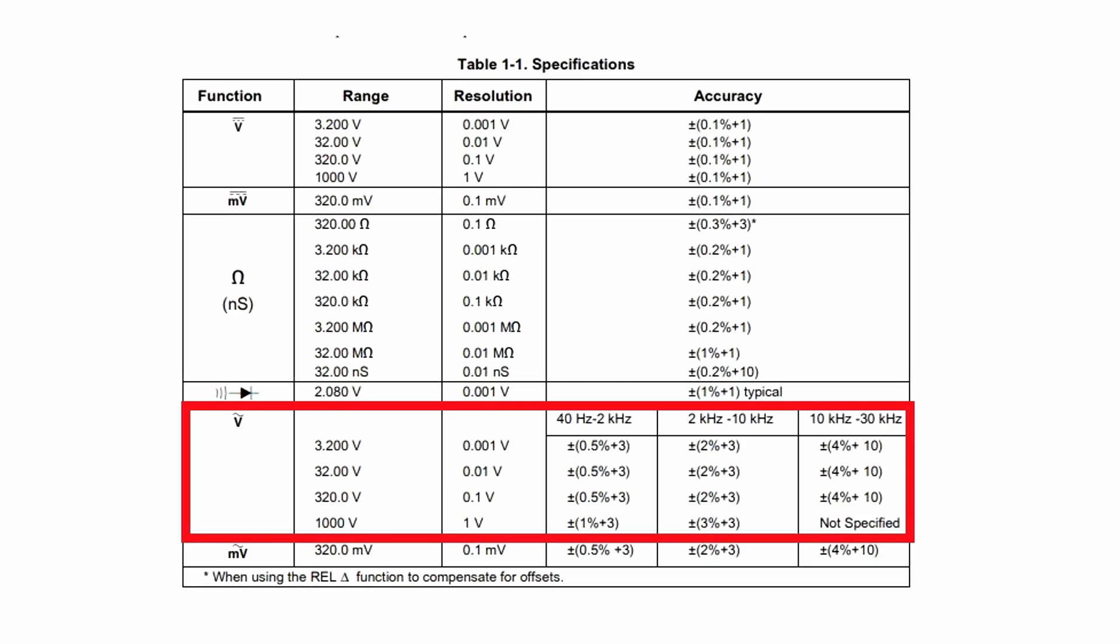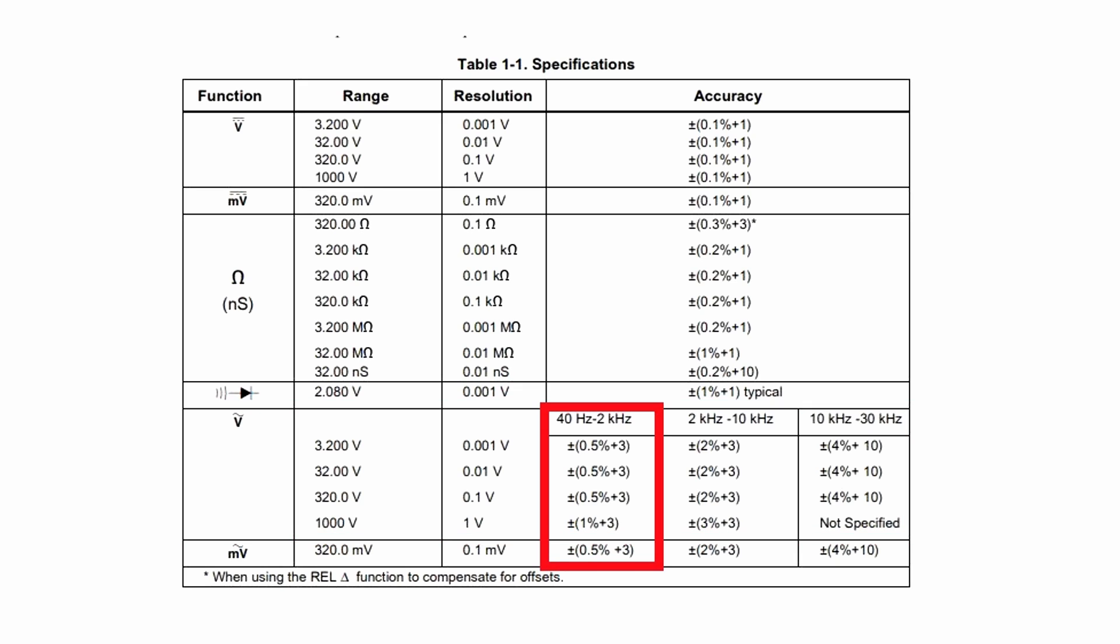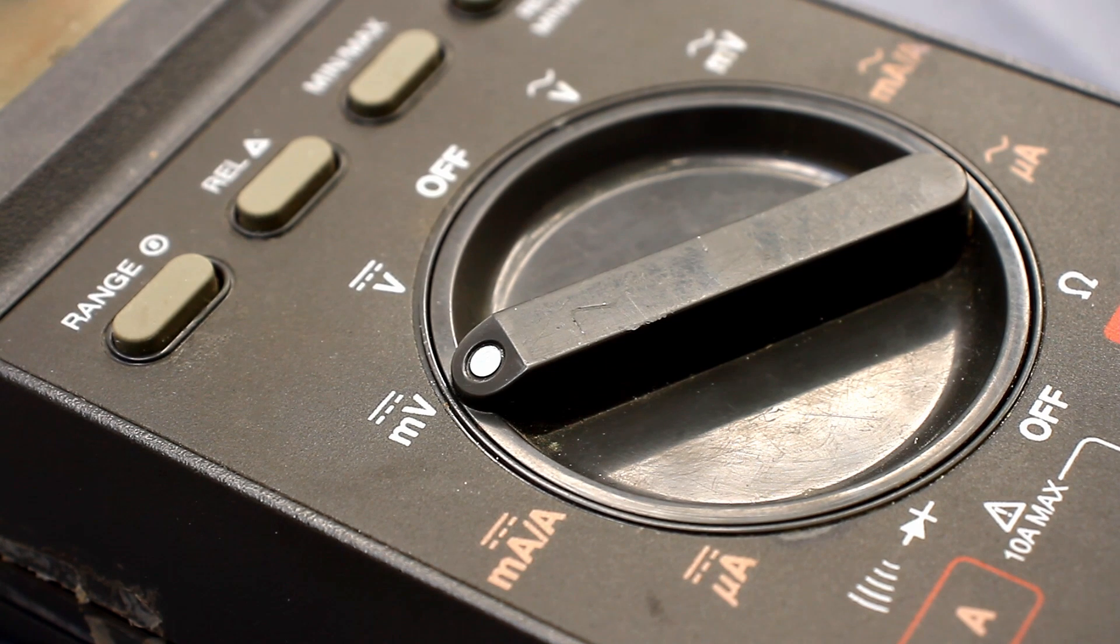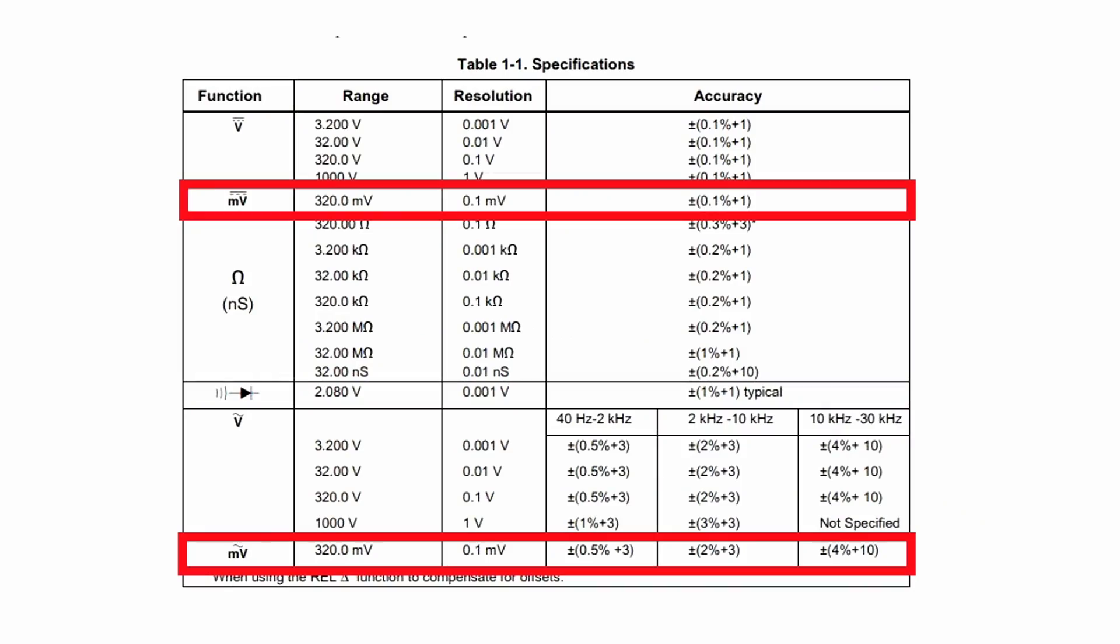Of course, with increasing frequency the measurement error increases. If at low frequencies the tolerance is only half a percent, then at frequencies of 10 to 30 kHz, tolerance is already 4% and 10 units of the least significant digit. The device has modes for measuring low voltages for both DC and AC voltage. The error is small.